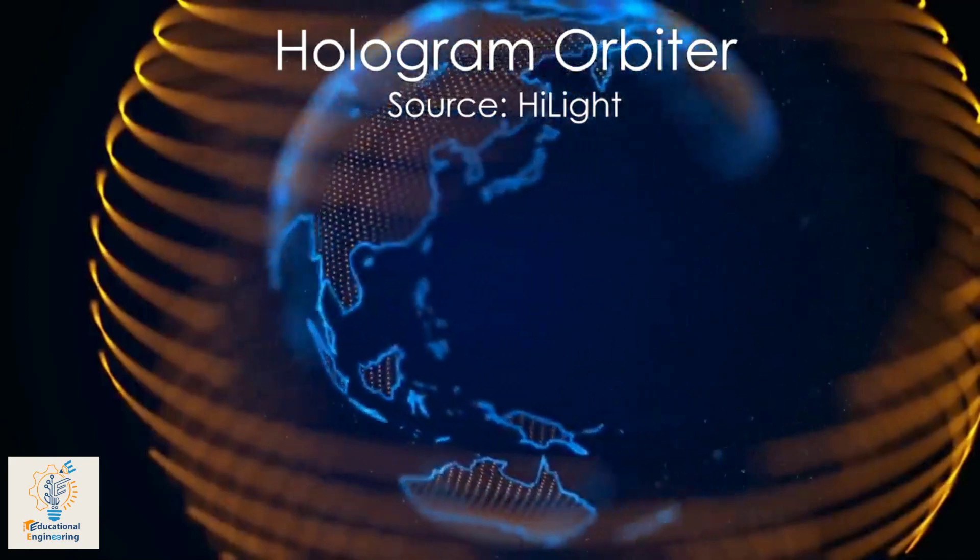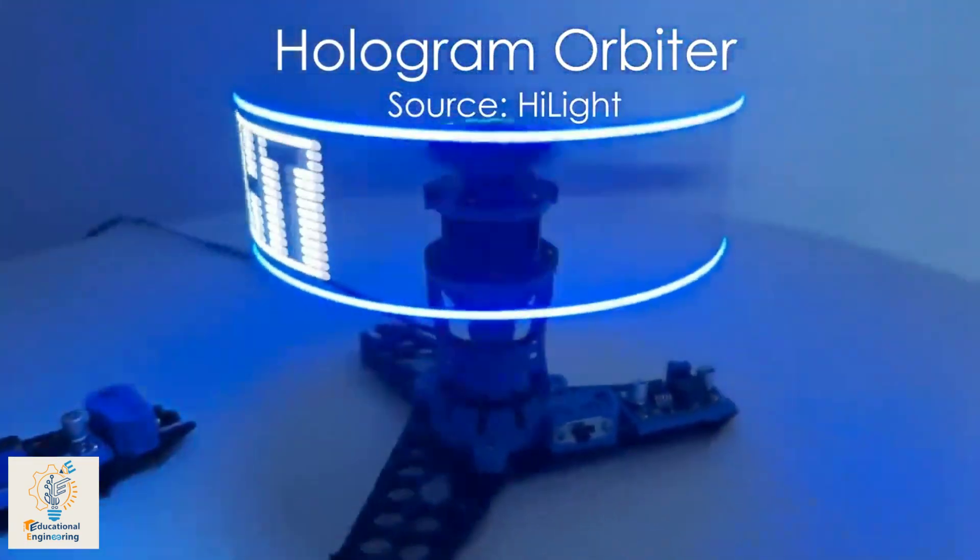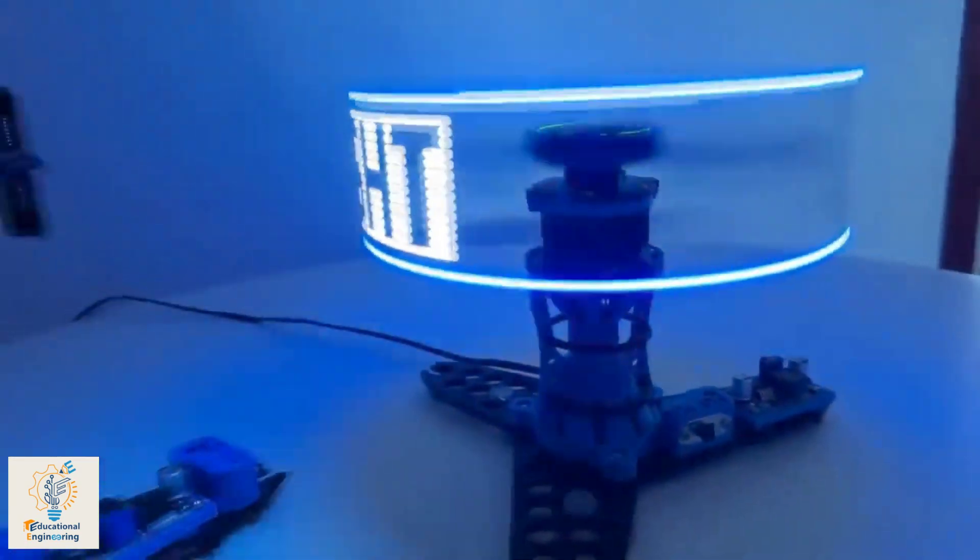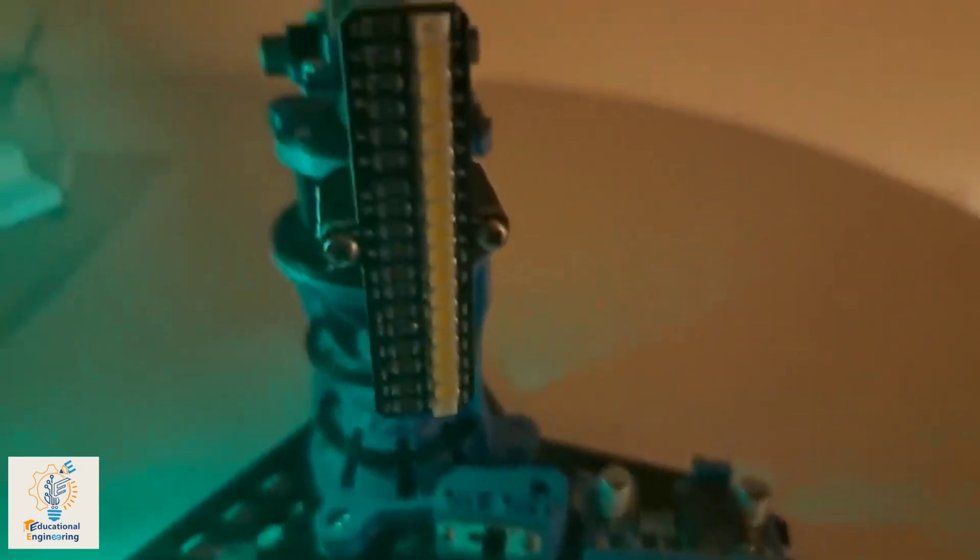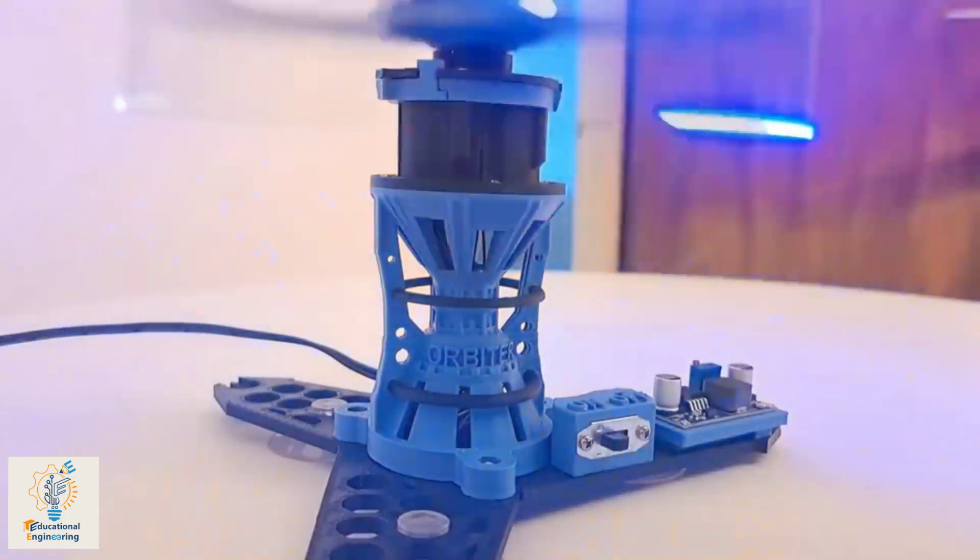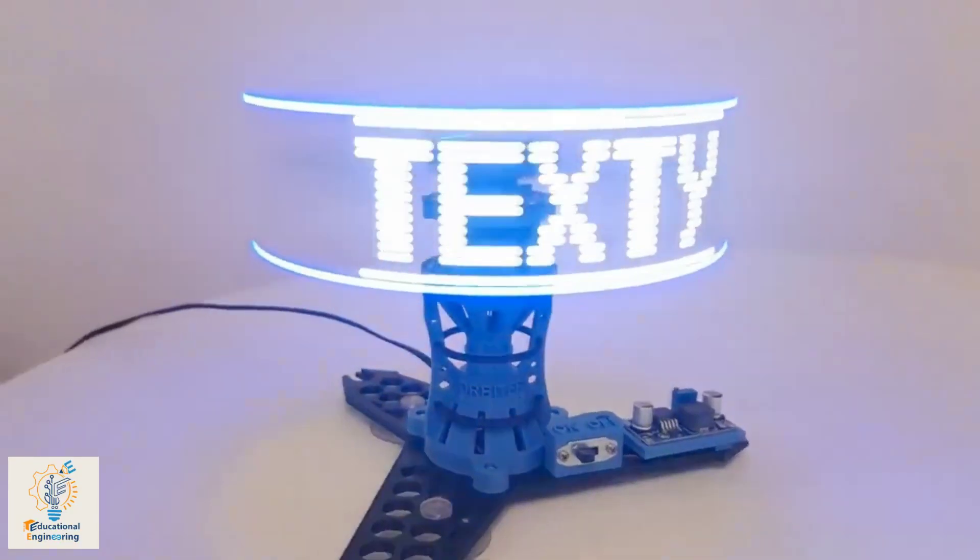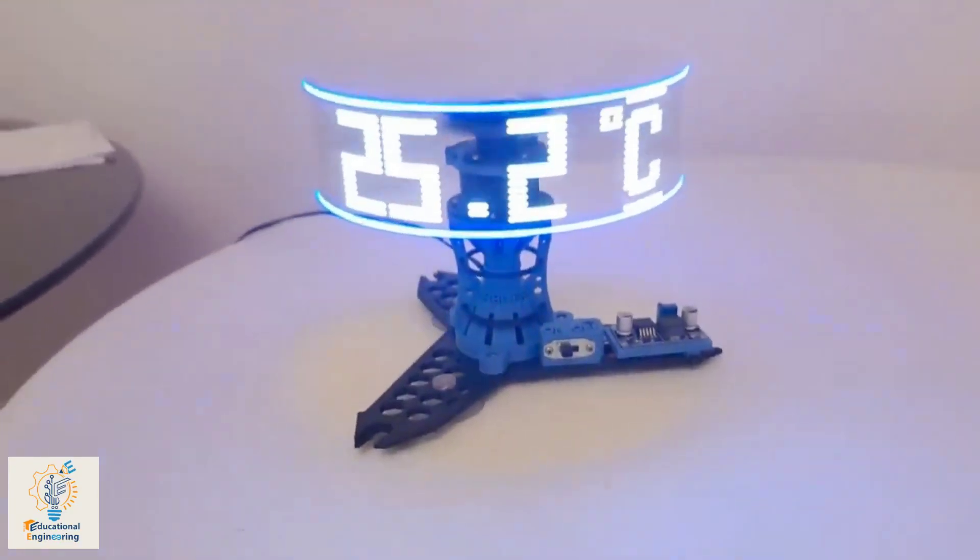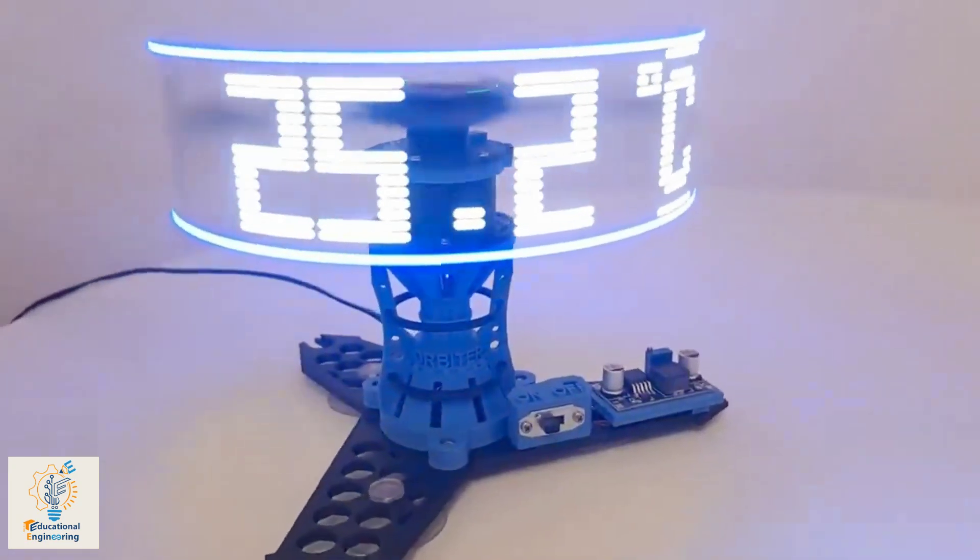Looking for new ways to display messages, then this hologram orbiter might surprise you. It consists of two LED units that rotate at a very high speed to create a persistence of vision effect. Due to this, a visual image of the object appears in space, which can be viewed from any direction.